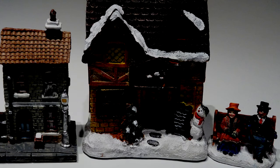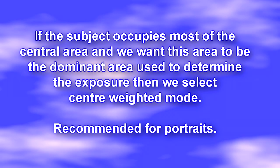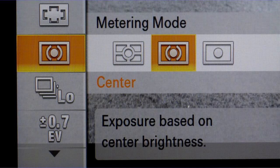There are some situations however, like on a beach or in snow, where using multi-mode will lead the image to being underexposed and as a result it will appear dark. This is because the lighter areas are biased in the exposure. In this situation it is better to switch to a metering mode which concentrates on the central area of the image for exposure determination. This mode is called centre weighted.